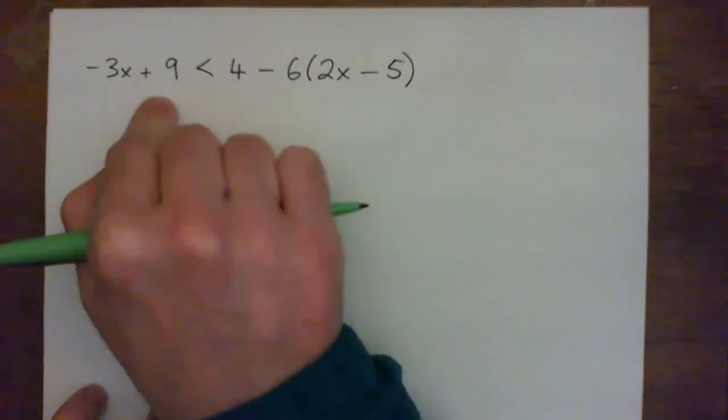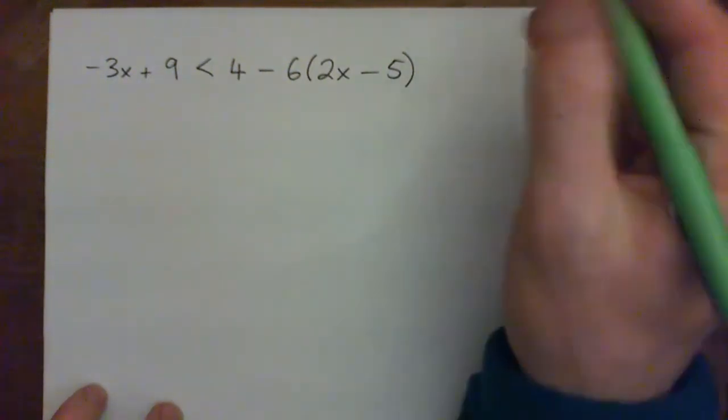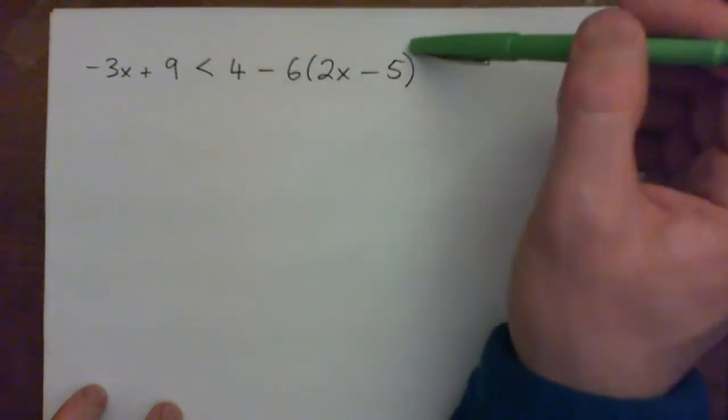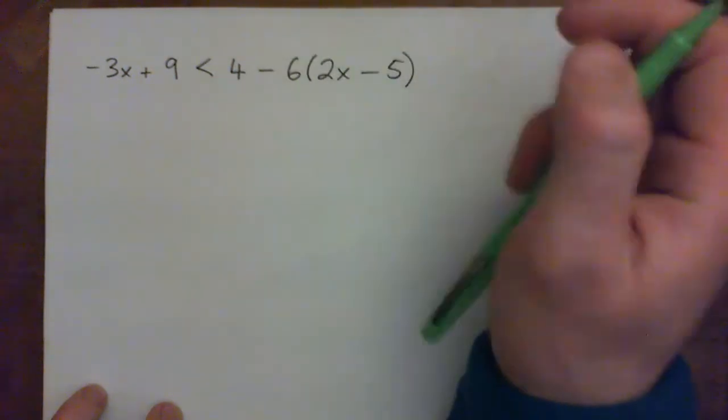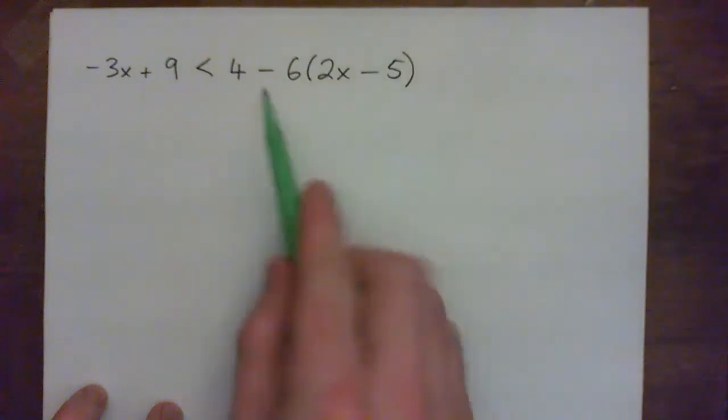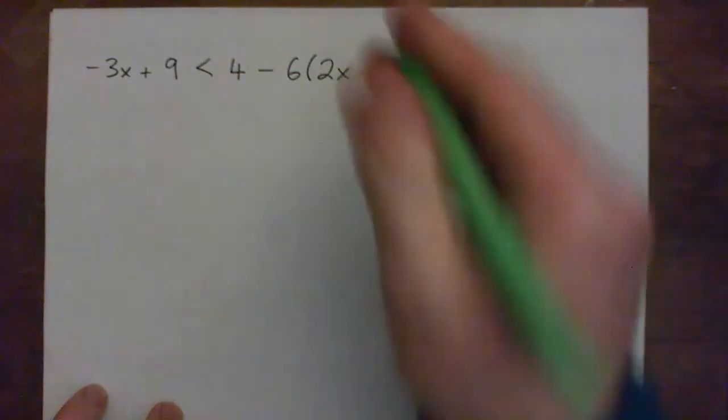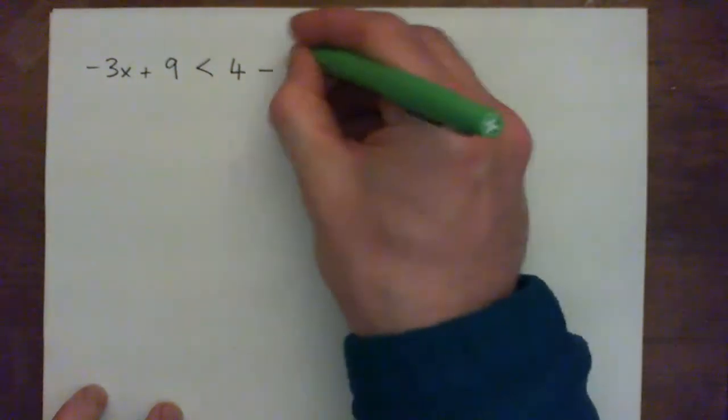So on the left we're done, but on the right side of the equation, we can use the distributive property and add like terms. Now we cannot go 4 minus 6 to get negative 2, because that would be subtracting before we have multiplied. If we simplify, we've got to think about order of operations, PEMDAS, so we need to multiply first.